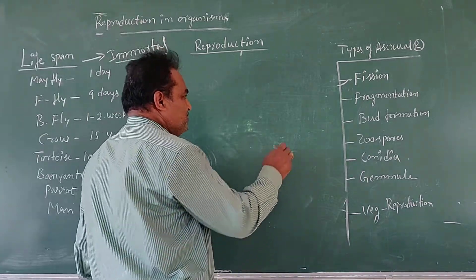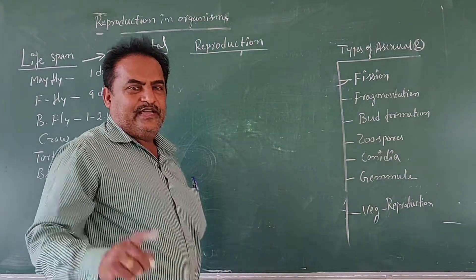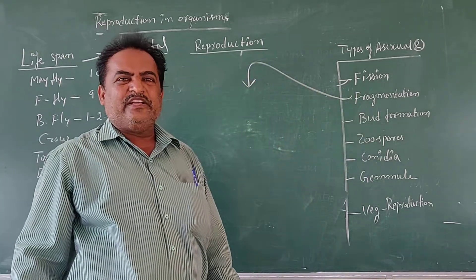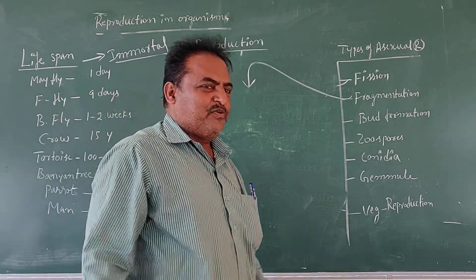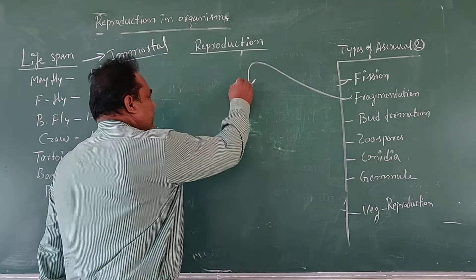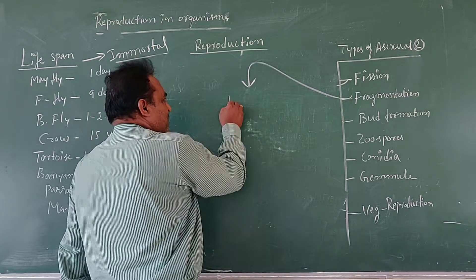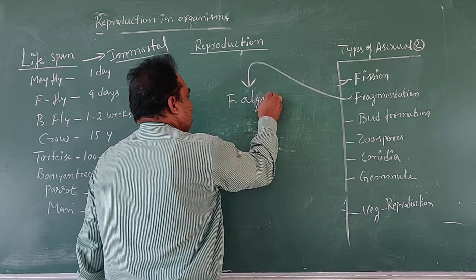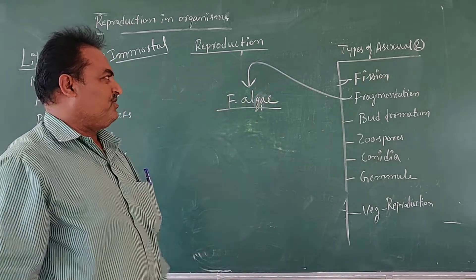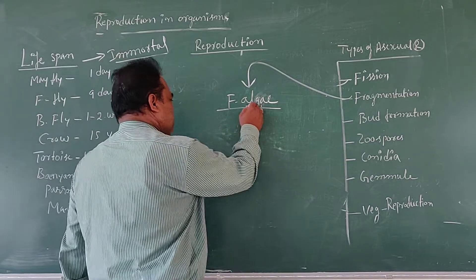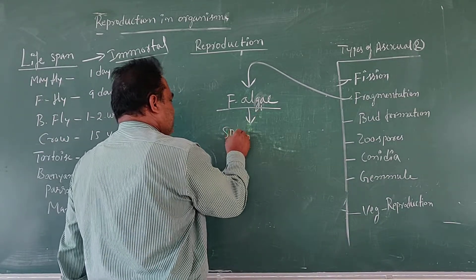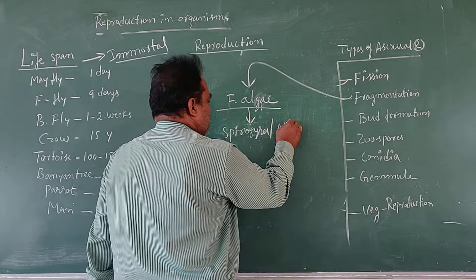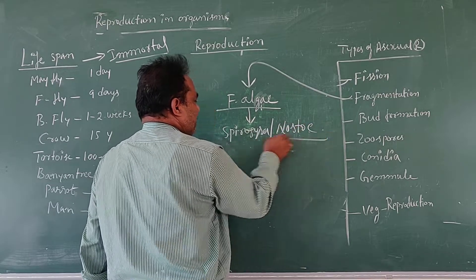The second type of asexual reproduction is called fragmentation. The fragmentation process should be expressed only in the case of filamentous algal forms. Fragmentation is very common in the case of Spirogyra and Nostoc.